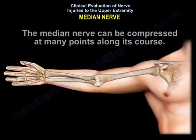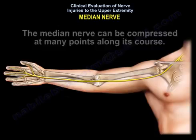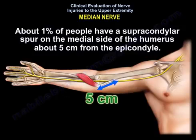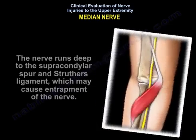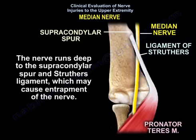Median nerve injury: the median nerve can be compressed at many points along its course. About 1% of people have a supracondylar spur on the medial side of the humerus, about 5 cm from the epicondyle. The nerve runs deep to the supracondylar spur and the Struthers ligament, which may cause entrapment of the nerve.